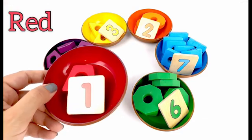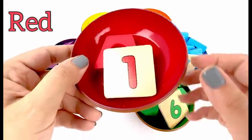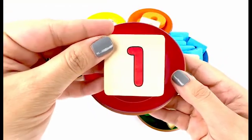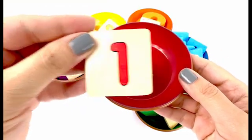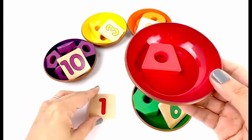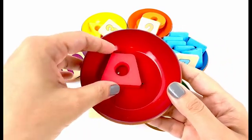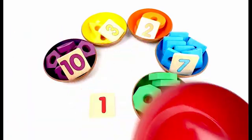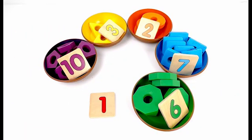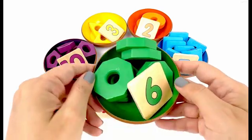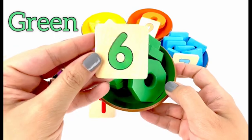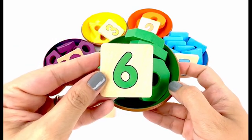This ball is color red. We have number one in the ball. Let's count how many shapes do I have in my ball. One — one trapezoid!